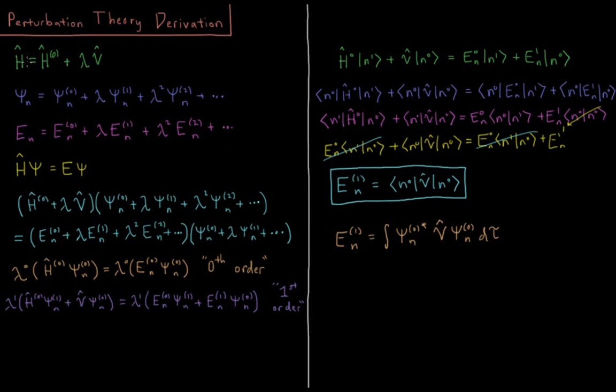And for the purposes of this derivation, we're going to add this parameter lambda in front of our perturbation. Now lambda is going to be some unspecified number which has a value between 0 and 1, but it actually doesn't matter at all. It's just a dummy variable which is going to be used for the purposes of derivation.